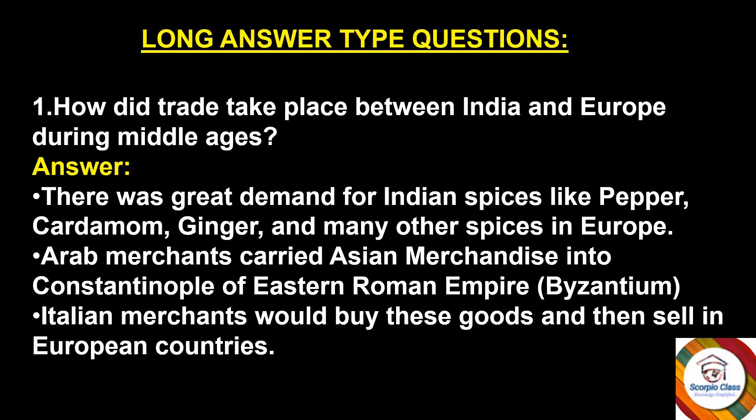Question 1: How did trade take place between India and Europe during the Middle Ages? Answer: There was great demand for Indian spices like pepper, cardamom, ginger, and many others in Europe. Arab merchants carried Asian merchandise into Constantinople of the Eastern Roman Empire, known as Byzantium. Italian merchants would then buy these goods and sell them in European countries. This is how trade took place.